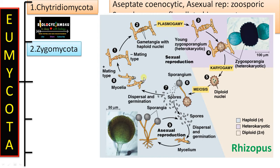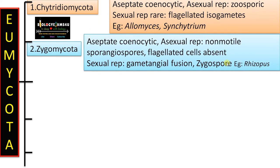The second phylum is Zygomycota. Rhizopus, the common bread mold, belongs to this group. Here the hyphae is also aseptate and coenocytic. Asexual reproduction is by means of non-motile spores called sporangiospores. Sexual reproduction is by gametangial copulation — two hyphae of opposite strains come into contact, finally forming a structure called a zygospore, which is a characteristic feature of this group. Flagellated cells are absent.